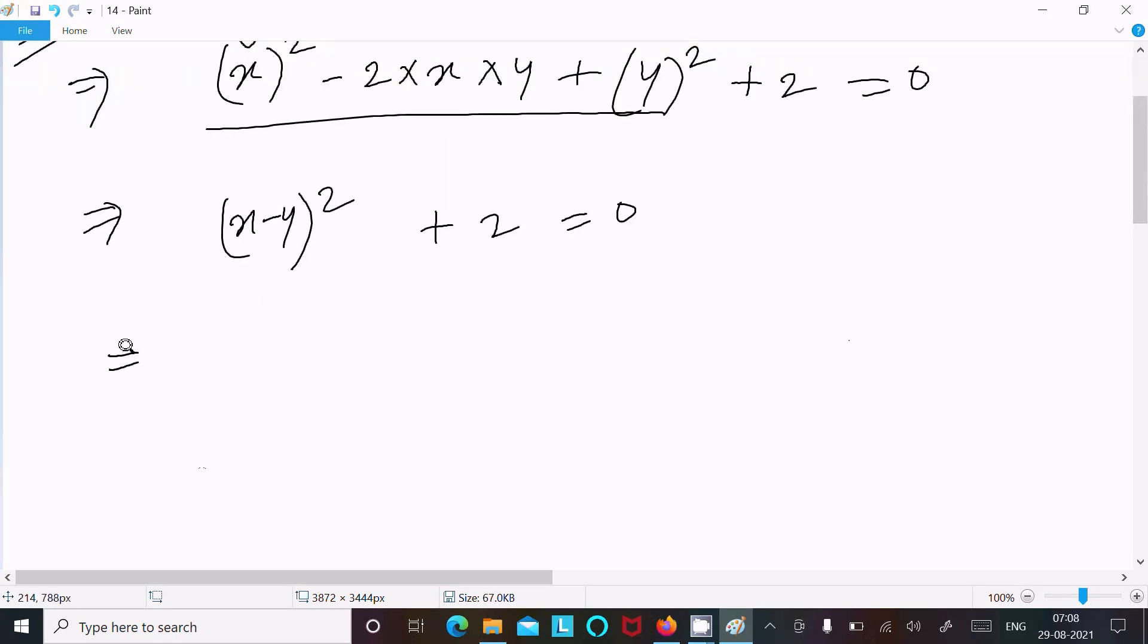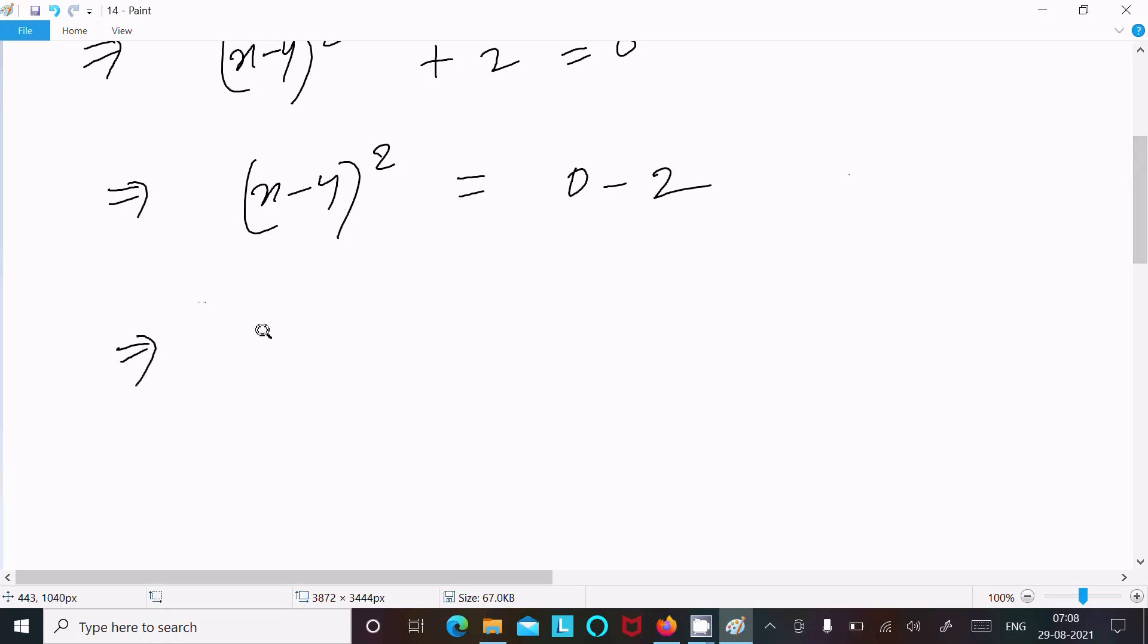After that, 2 move on the right. So x minus 4 whole square, move on the right. So that become 0 minus 2. Now here x minus 4 whole square, 0 minus 2, minus 2.